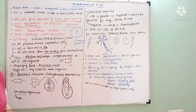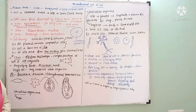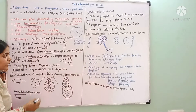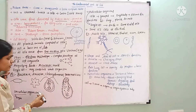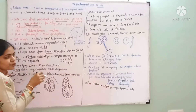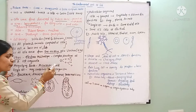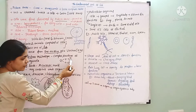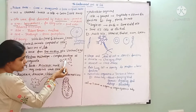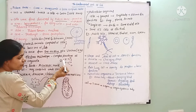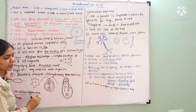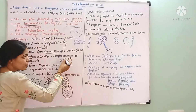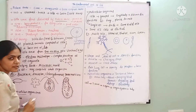The third point of cell theory states that all cells arise from pre-existing cells. This theory was proposed by Virchow in 1855. When we talk about cell division, a mother cell or pre-existing cell divides to form a new cell. That new cell is again a pre-existing cell for the next generation.